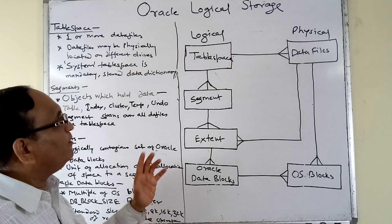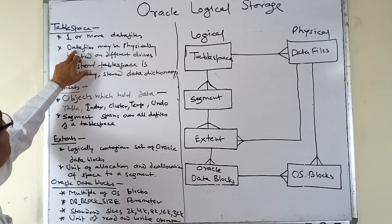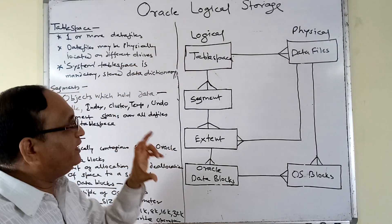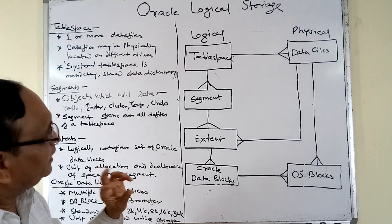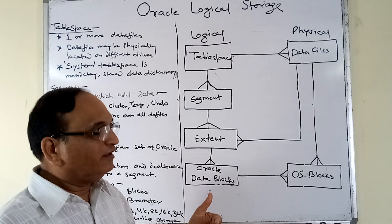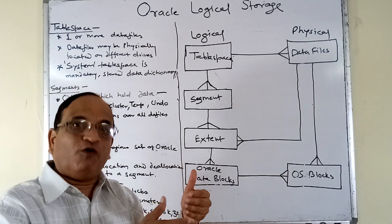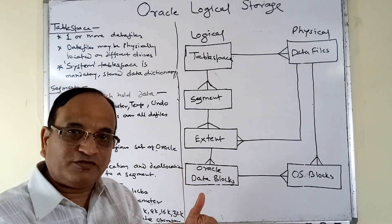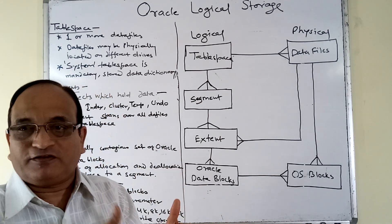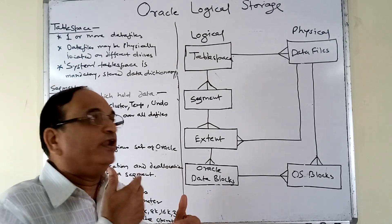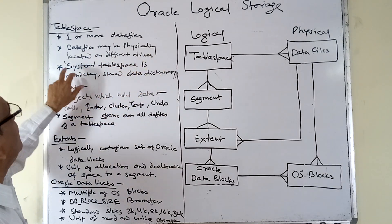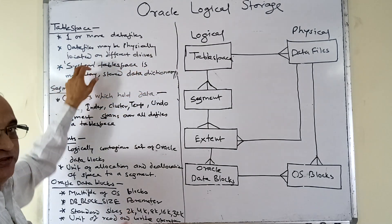An important thing about the tablespace is that it may be physically located on different drives. If a tablespace contains three data files, those three data files can be located on three different physical drives, so that data stored in the tablespace gets spread over multiple drives. This allows parallel read operations in a multi-user system, making the system very efficient.